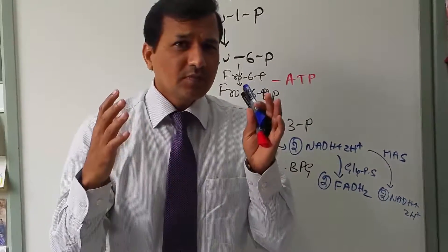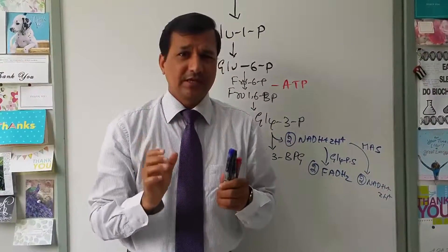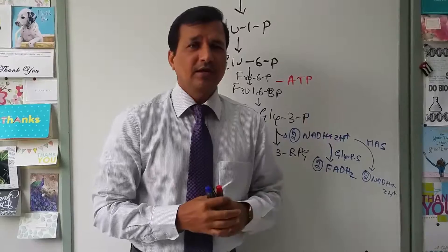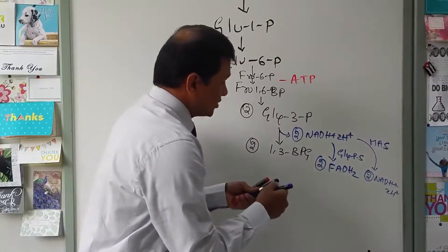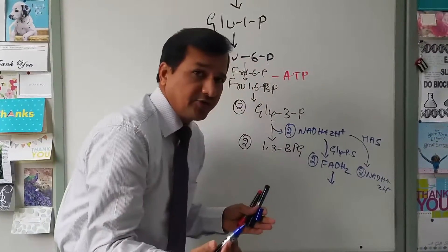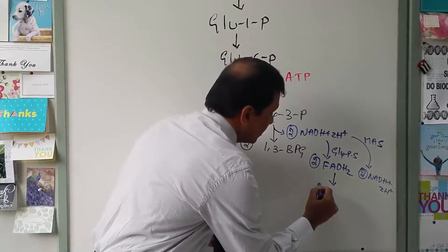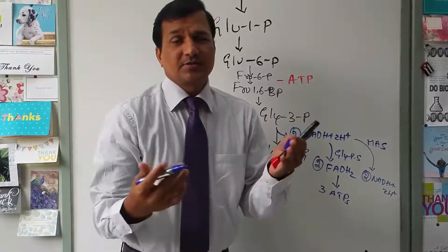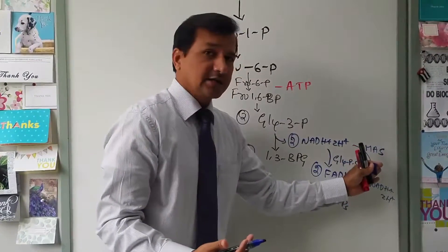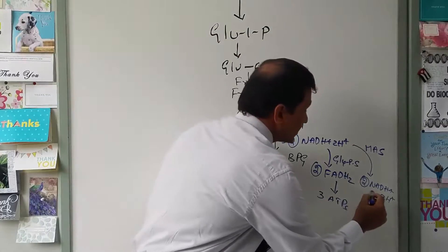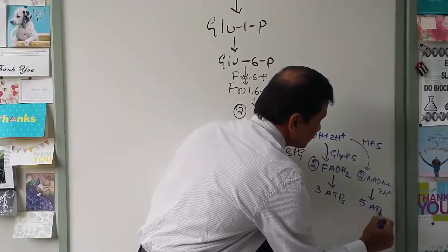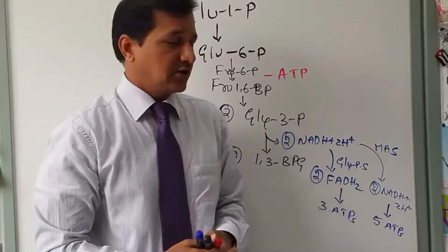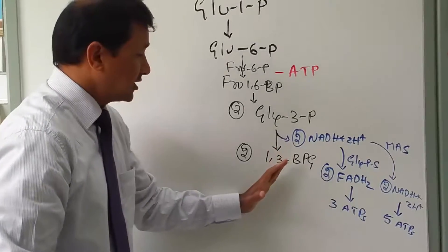FADH₂ is equivalent to 1.5 ATPs in the electron transport chain. With 2 FADH₂, you get 3 ATPs. If the malate-aspartate shuttle is used — for example in neurons or cells with high energy demands — the NADH + H⁺ remains as NADH, which is worth 2.5 ATPs each, giving 5 ATPs total from the two cytoplasmic NADH + H⁺.